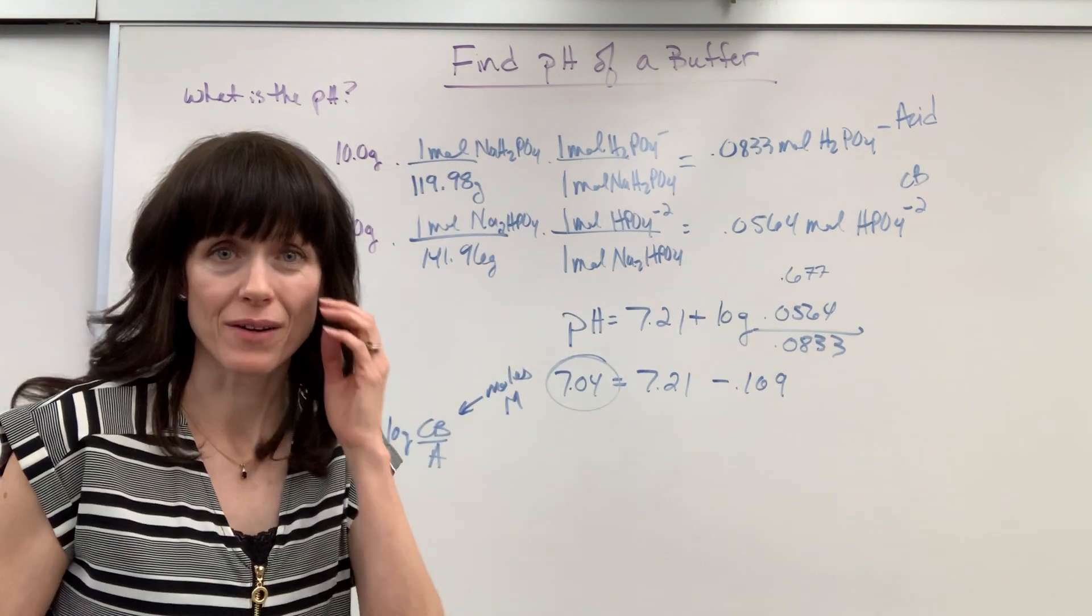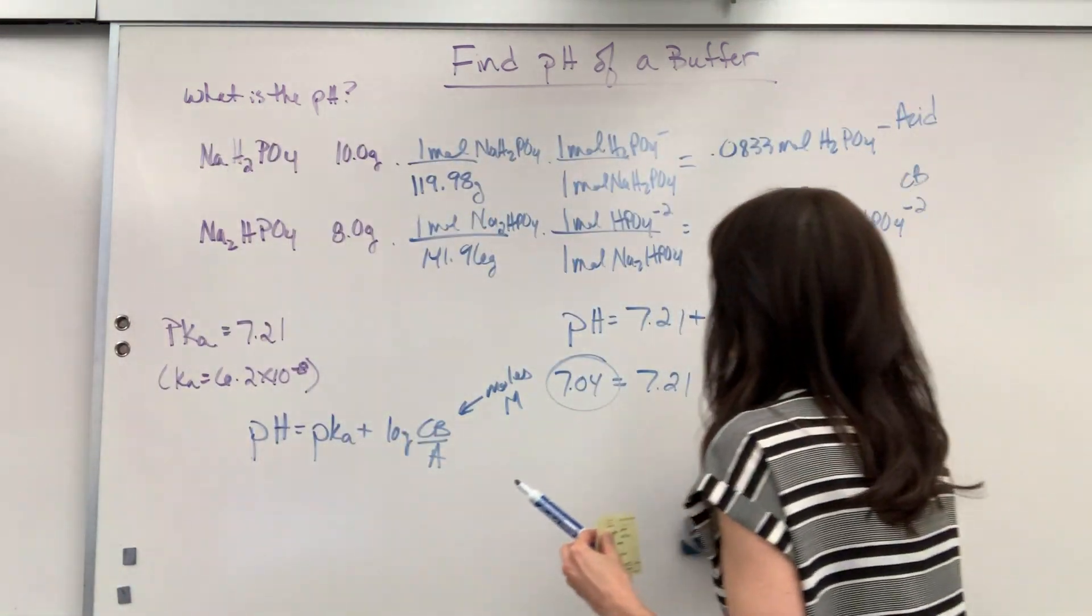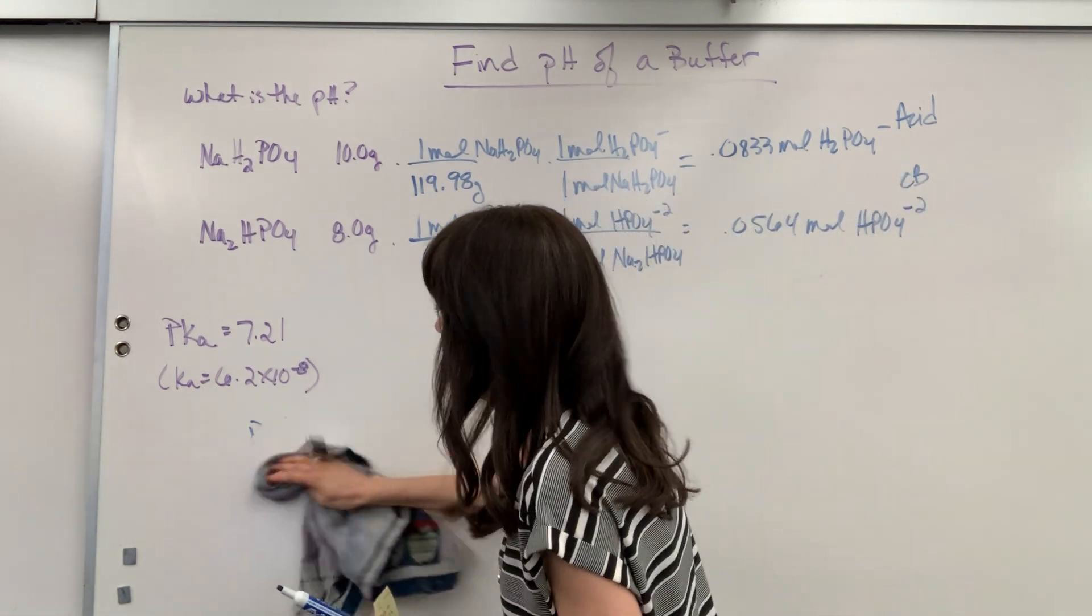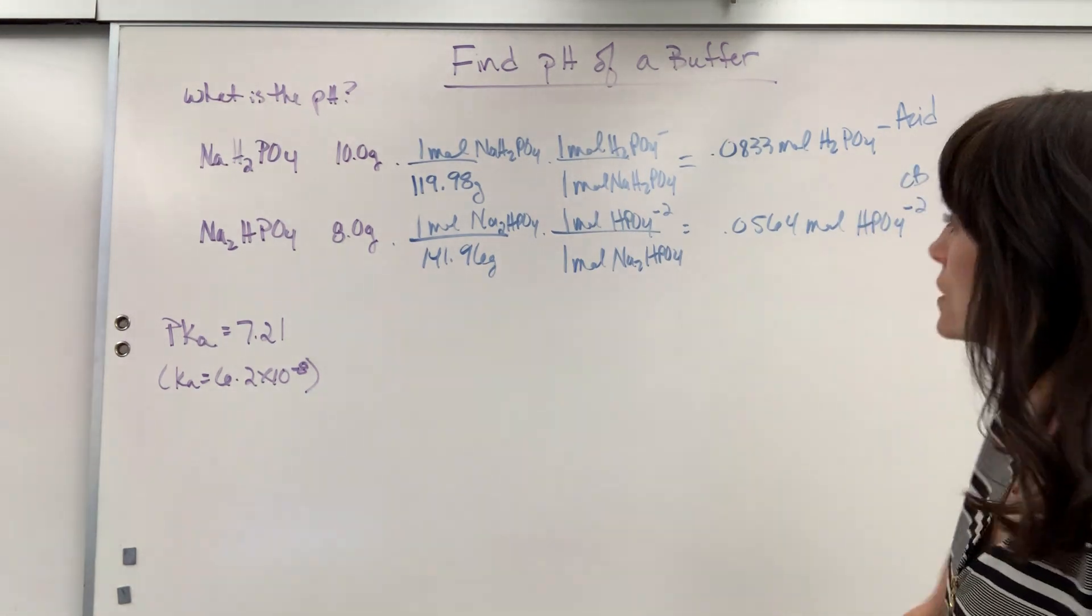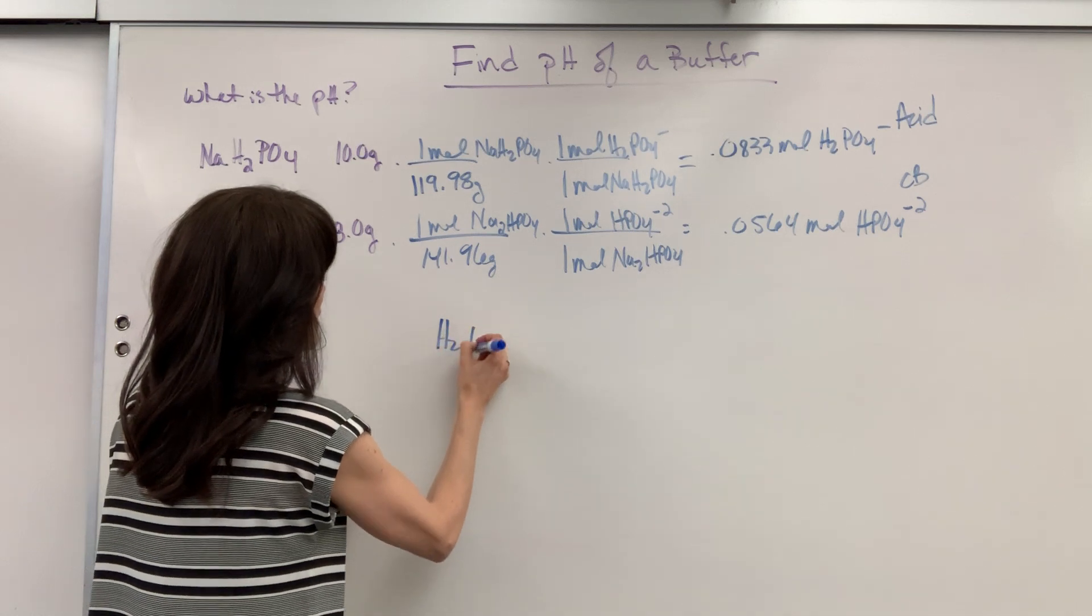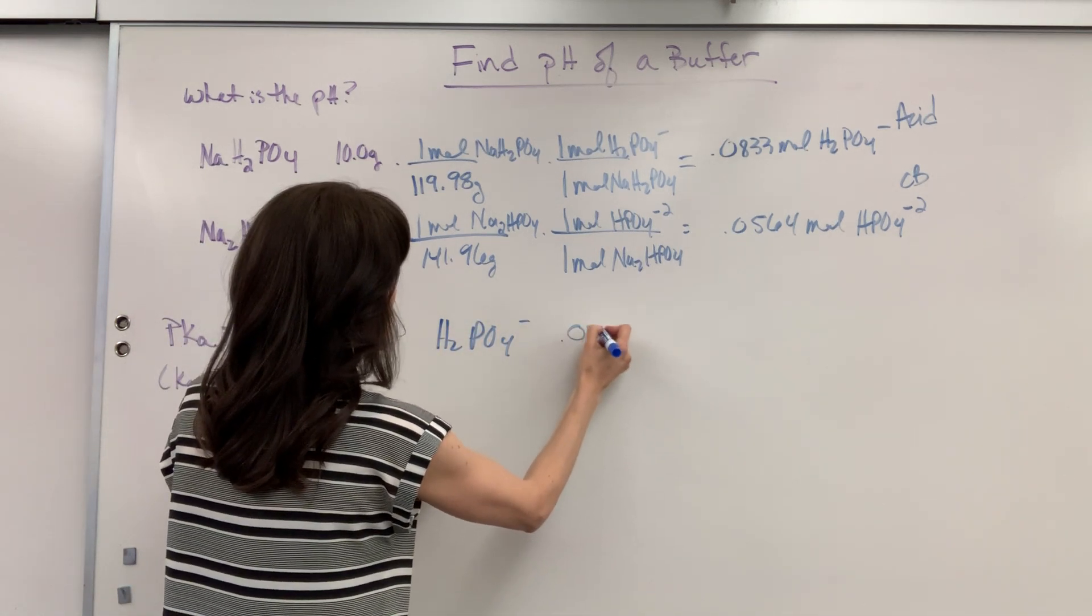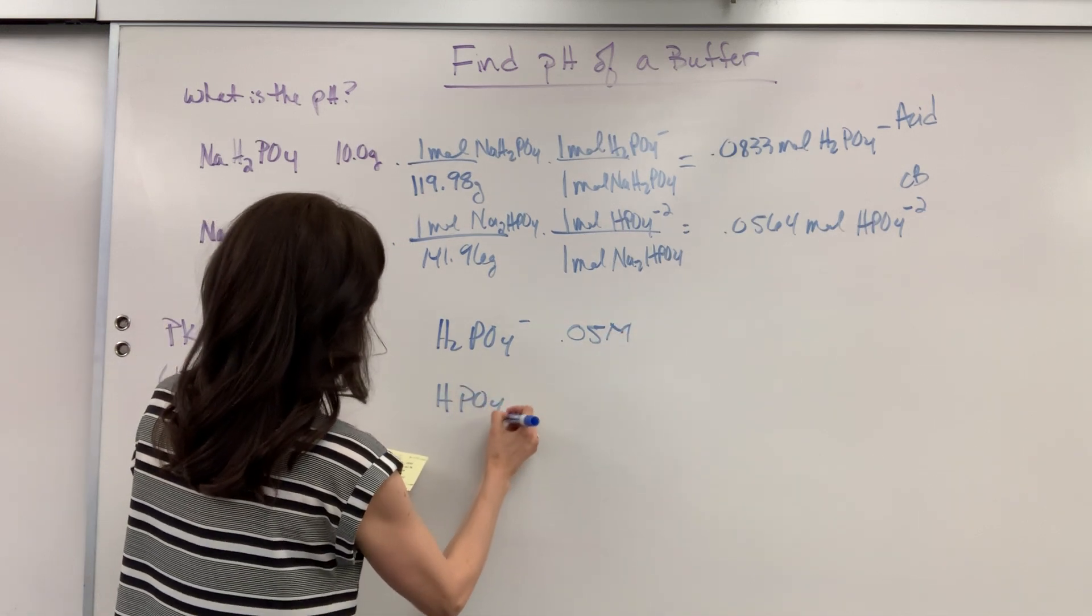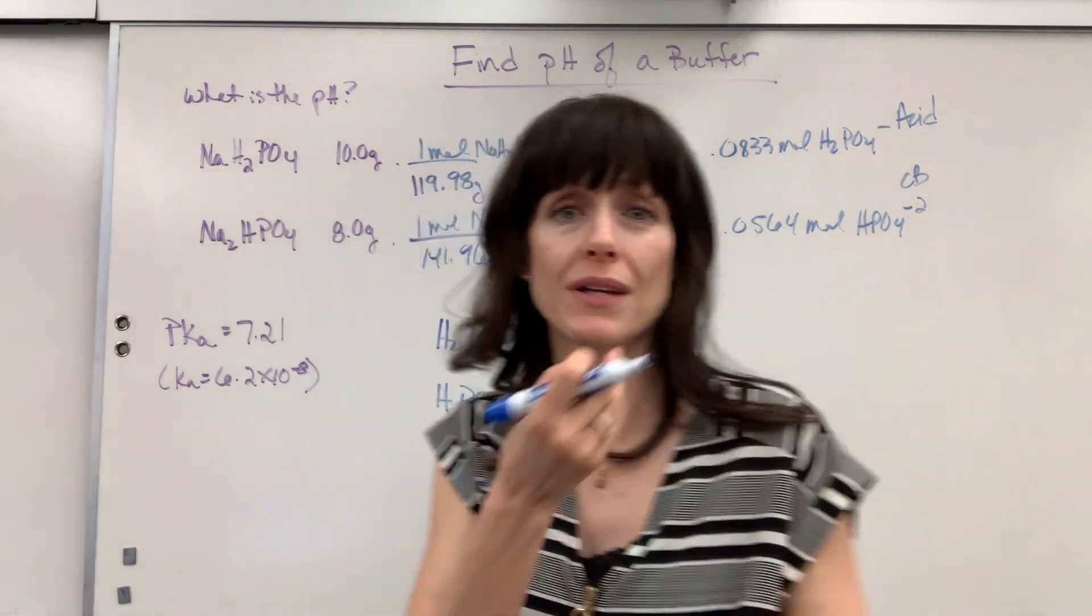So that was a fair amount of work. Here's another way that you're going to be given buffer problems where it's just a straight up buffer. You're not doing any titration. You'll be given molarities. So I want you to pretend that we are given a molarity of this dihydrogen phosphate of 0.05 molar and that the hydrogen phosphate molarity let's pretend is 0.1 molar.